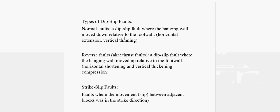Looking at the definitions: for a normal fault, it's a dip-slip fault where the hanging wall moved down relative to the foot wall. So the hanging wall is the one that's moving, being compared to the foot wall. A normal fault is a type of dip-slip fault where the hanging wall moved down relative to the foot wall.